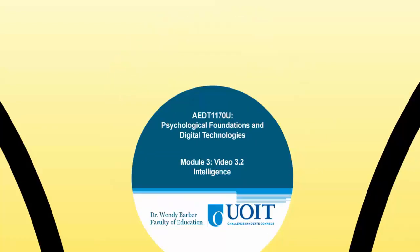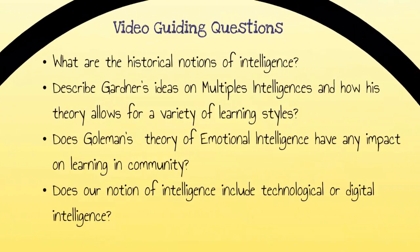Here are some guiding questions for this video. What are the historical notions of intelligence? Describe Gardner's ideas on multiple intelligences and how his theory allows for a variety of learning styles. Does Goleman's theory of emotional intelligence have any impact on learning in community or our online community? And does our notion of intelligence include technological or digital intelligence?